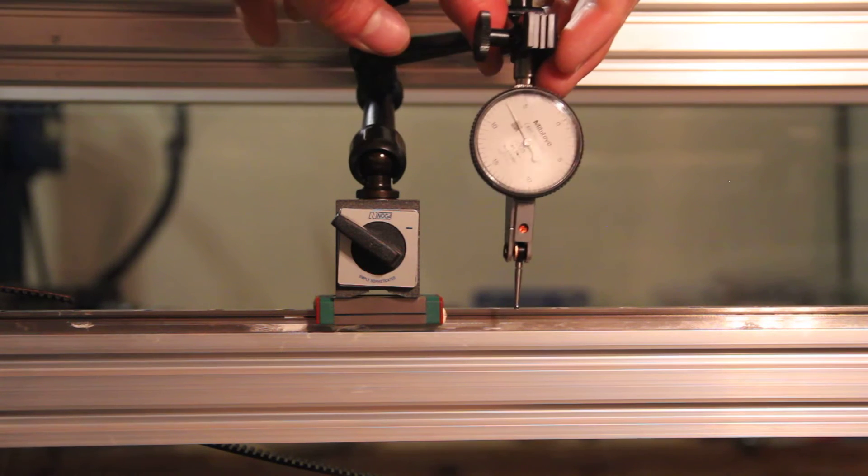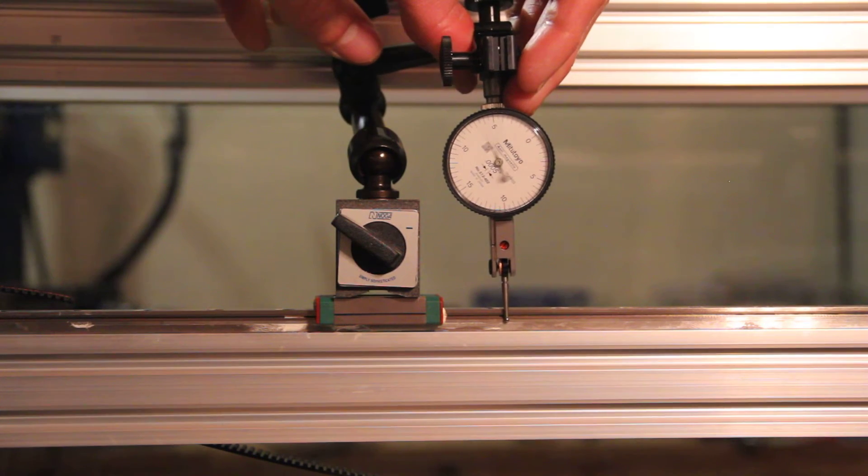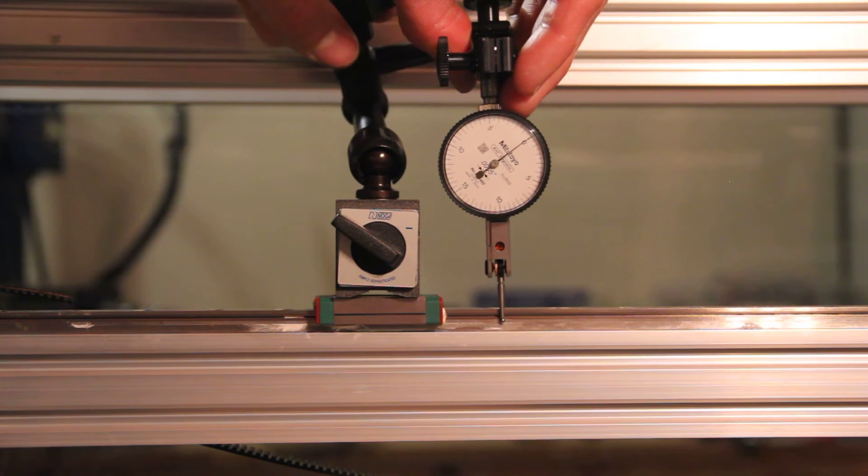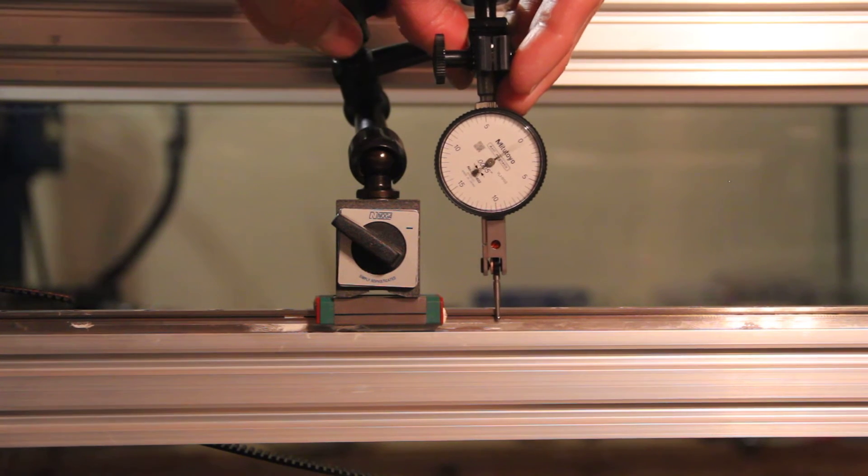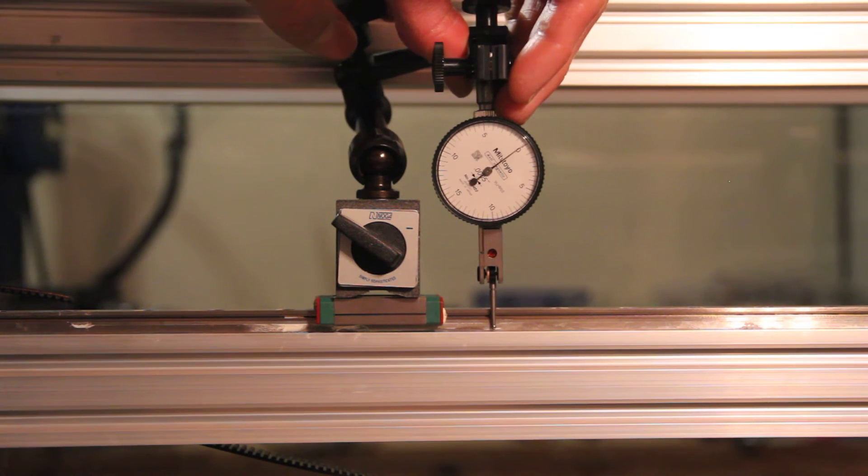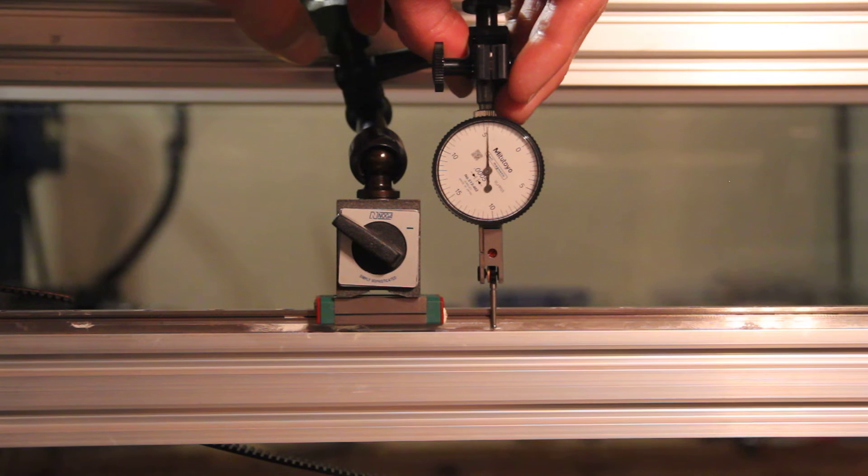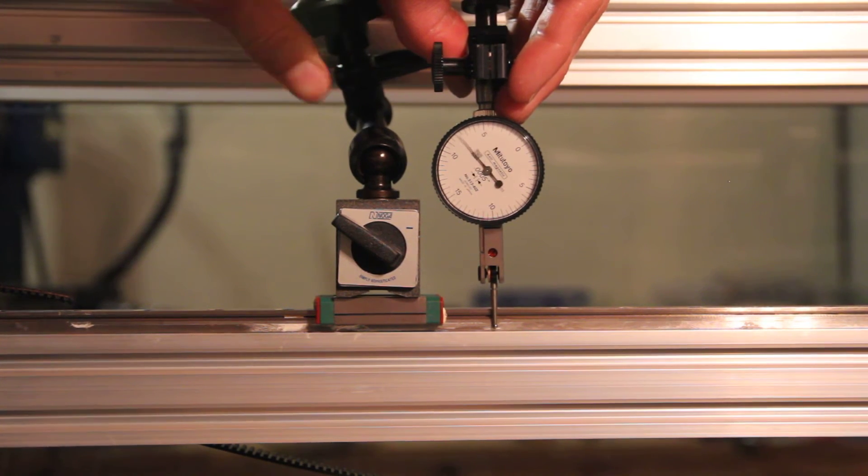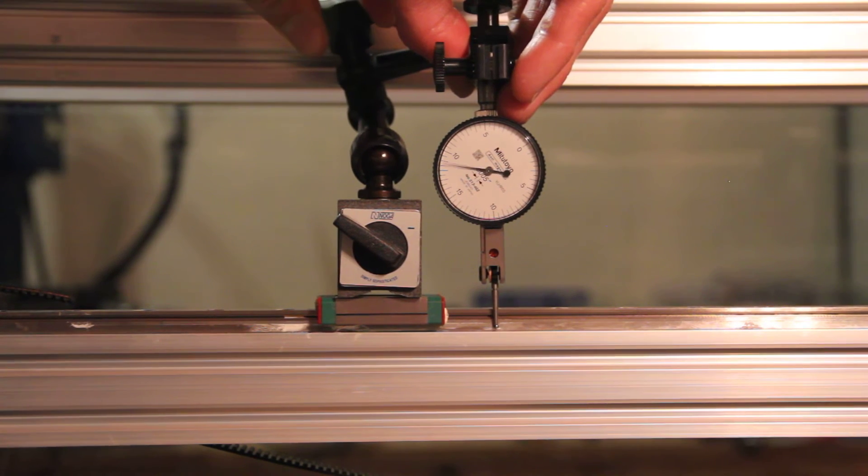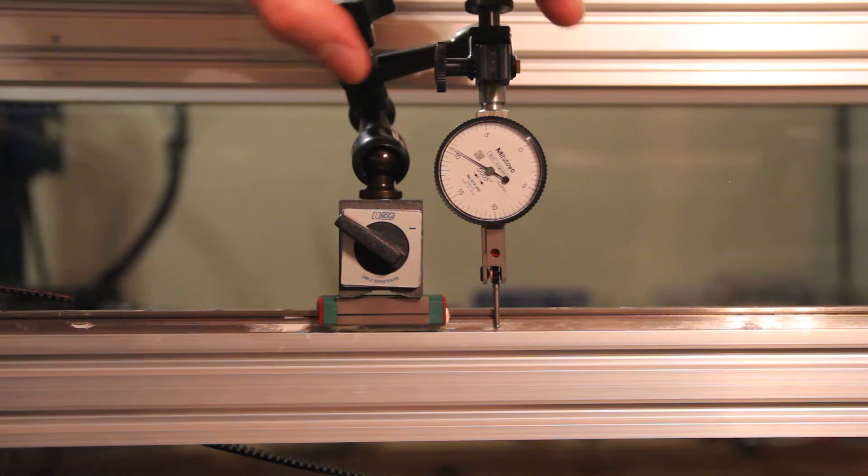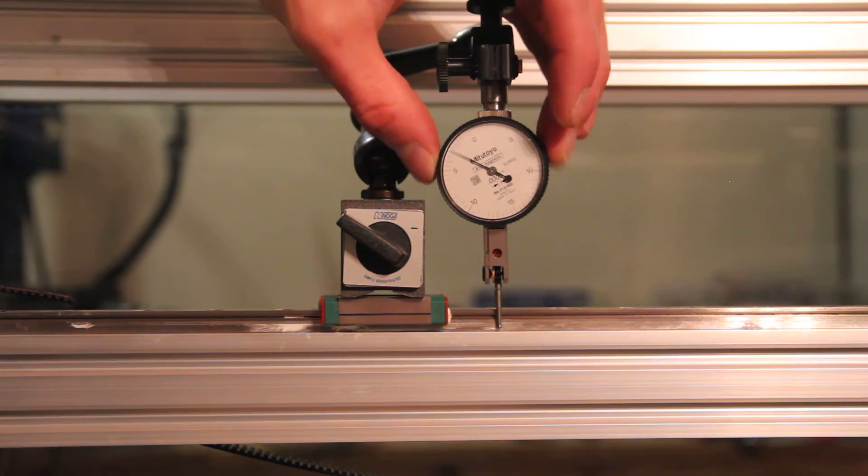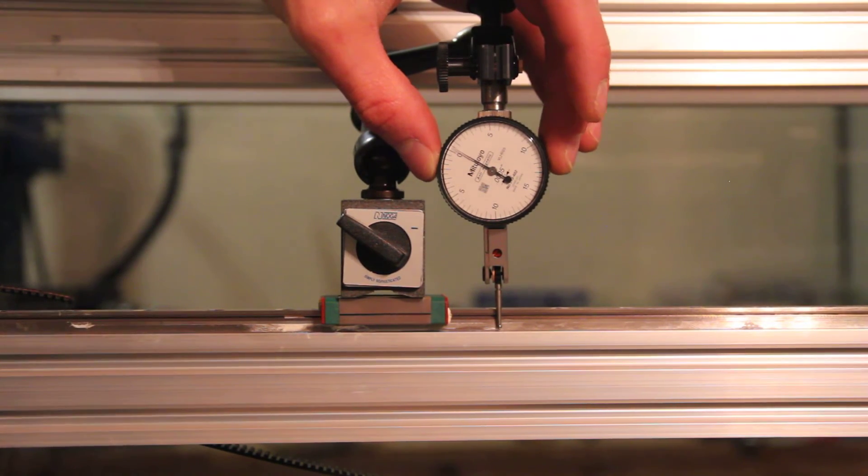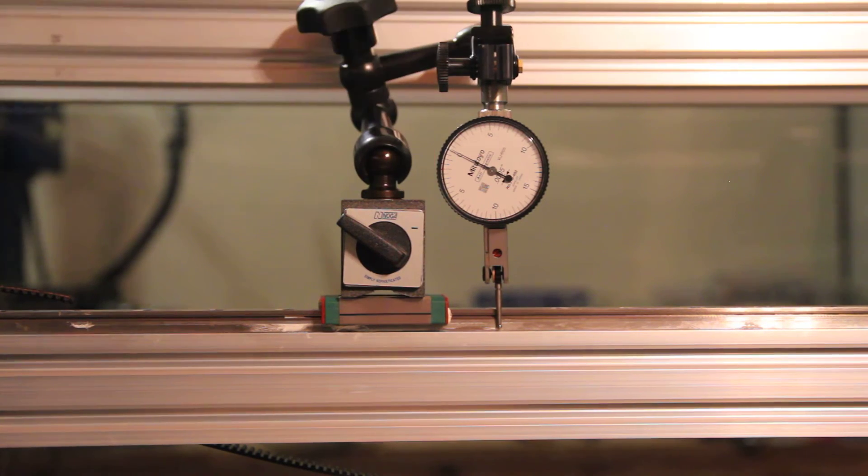So what I'm gonna do is make sure that this is actually indenting the test indicator ever so slightly so we can get a measurement. That looks about right. I'm gonna set the indicator reading to about zero, as close as I can see. Okay, that looks pretty good.